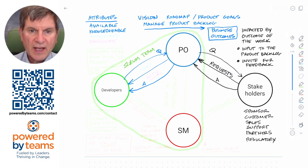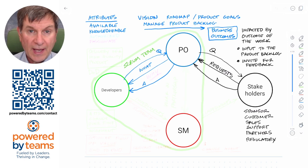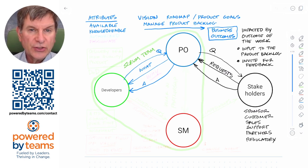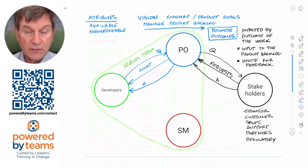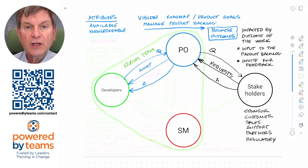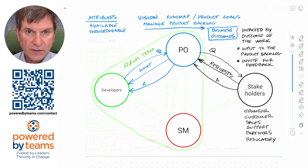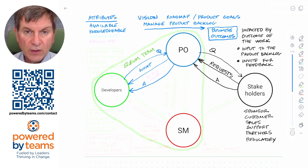Product owners pass what to build into the team. What is different than how — the team can figure out how to build something, but the product owner should talk about what to build. They should talk about problems to solve and let the team figure out the solutions. They should talk about outcomes rather than outputs and think like a consumer of the work more than a producer.